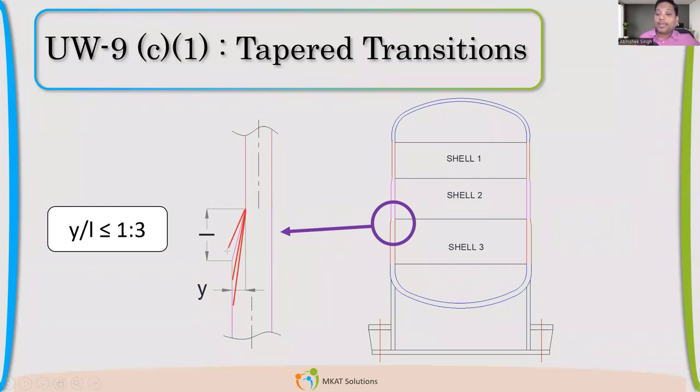The slope of like 1 is to 4, that is acceptable. I cannot have a slope of 1 is to 2. I hope it is clear to you.